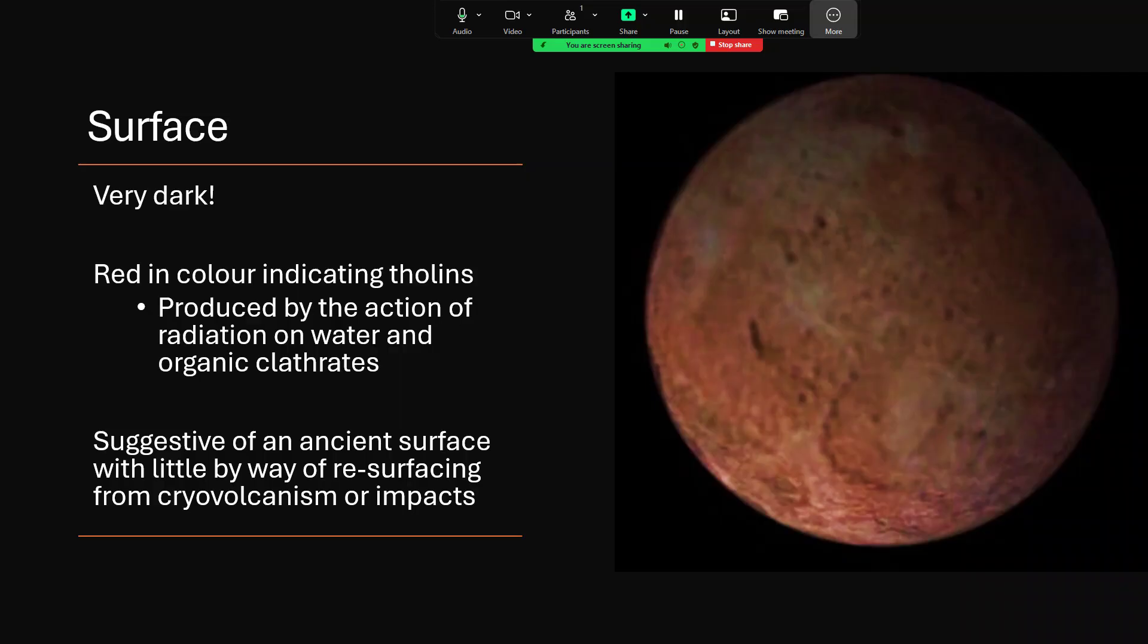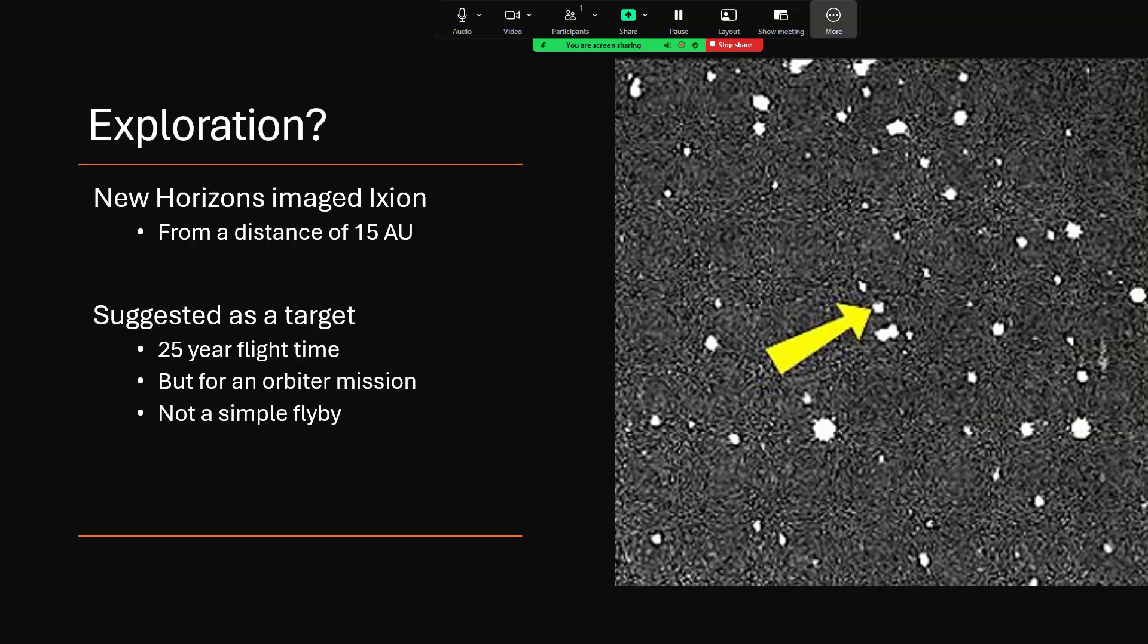It may well be that future exploration can be possible. We might get closer to this one and be able to find out more about it. It was imaged by New Horizons. It was able to take photographs from a distance of 15 astronomical units from Ixion.